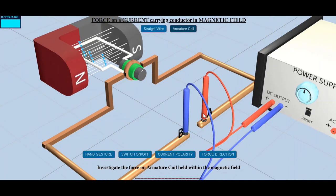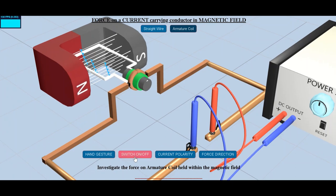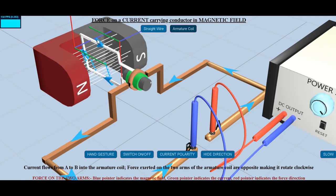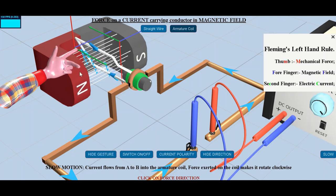In a DC motor where the current always flows in the same direction for a continuous clockwise rotation to happen, the coil is connected to the split rings also known as commutator. As the current flows through the coil held inside the permanent magnetic field, mechanical force given by Fleming's left hand rule acts on it and makes the coil rotate.